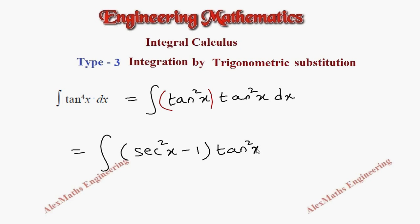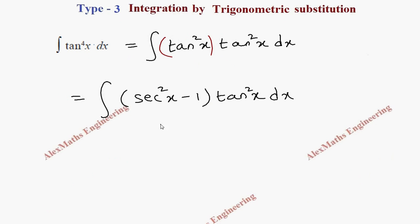Now we are going to multiply this tan squared x with both terms. So the first term is going to become secant squared x into tan squared x minus tan squared x, and totally into dx.